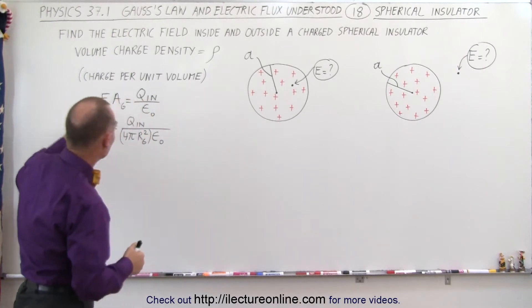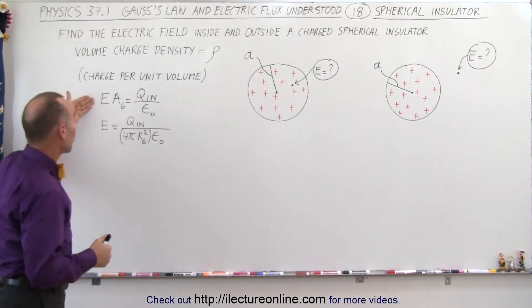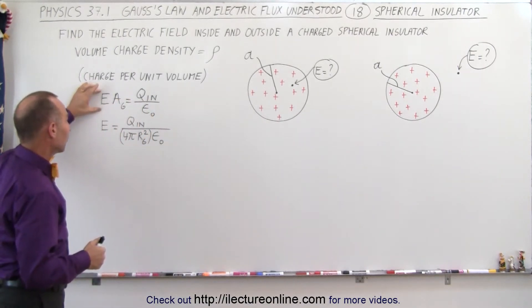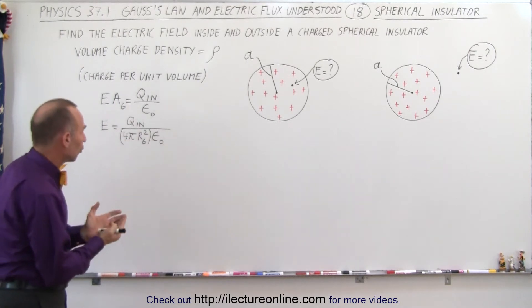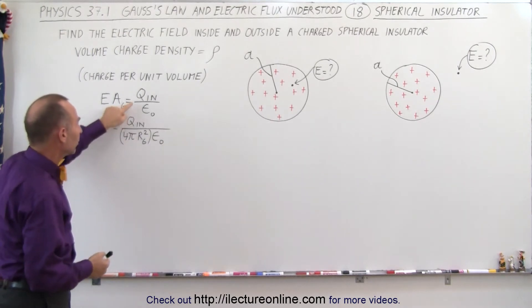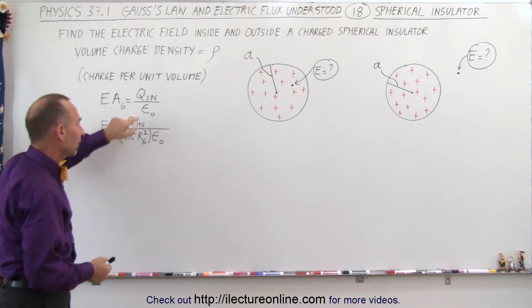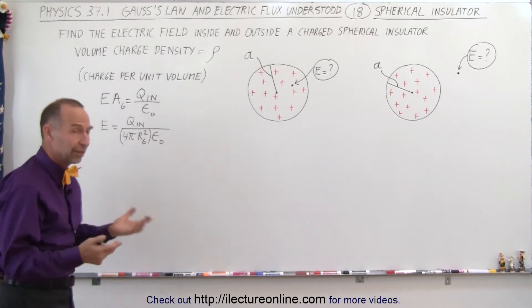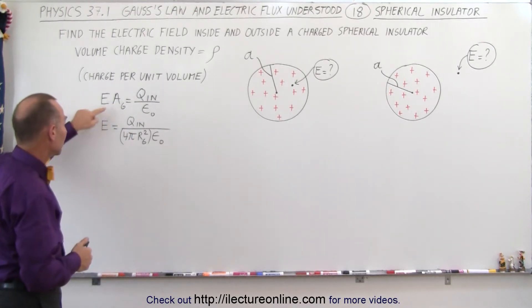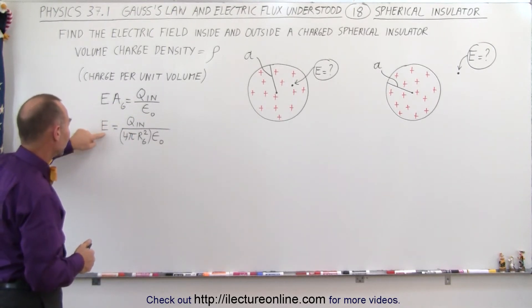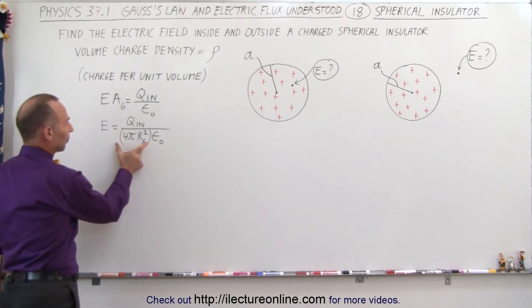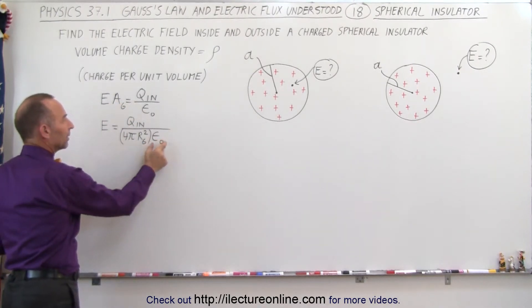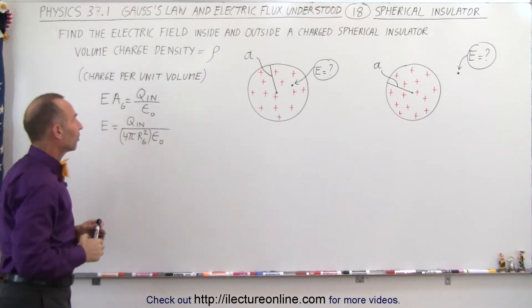We know that we're going to start with the same equation: the strength of the electric field times the surface area of the Gaussian surface is equal to the charge inside divided by epsilon sub-naught, which is the permittivity of free space. When we solve this for E, it's simply the charge inside divided by the surface area of a sphere times epsilon sub-naught.